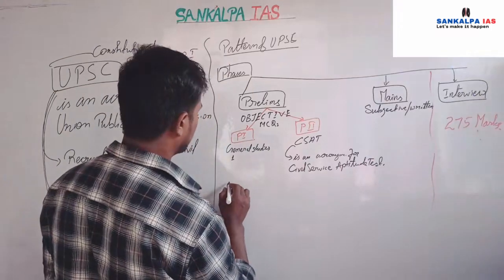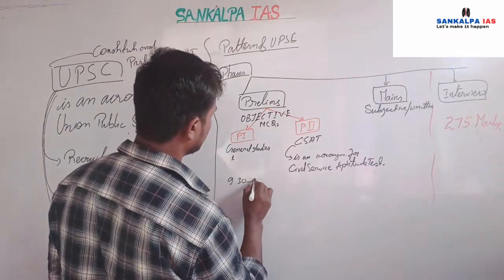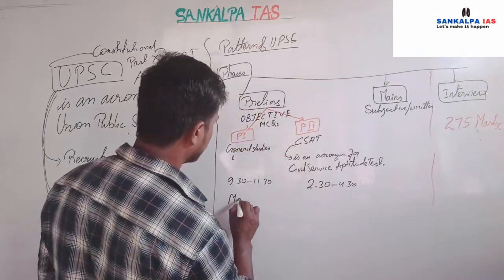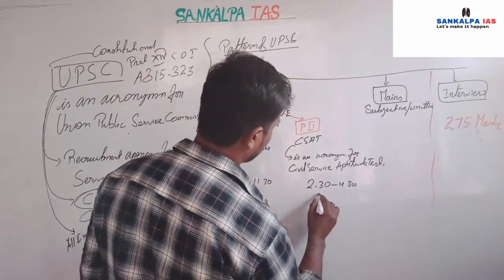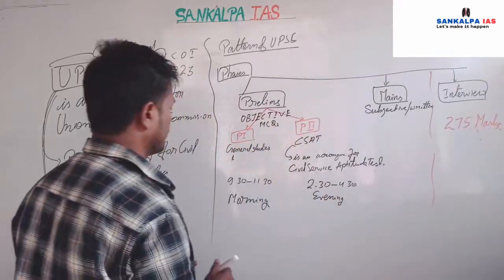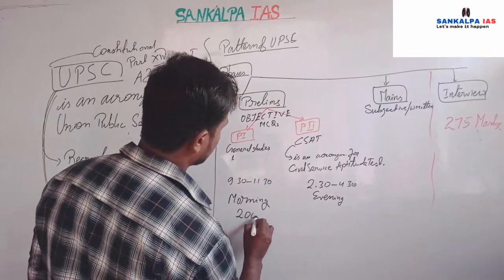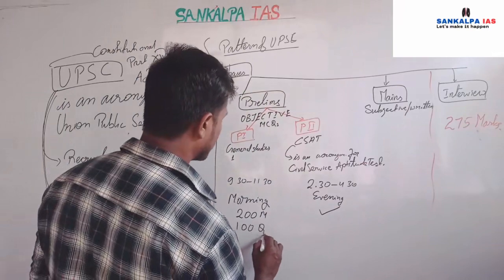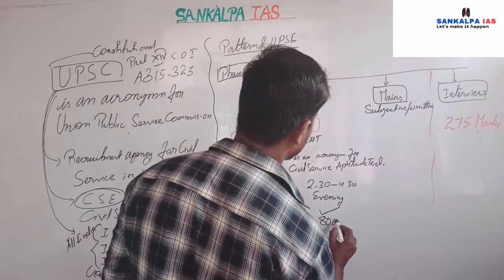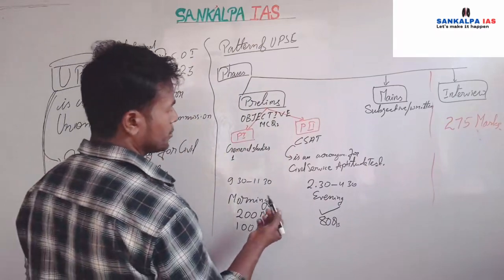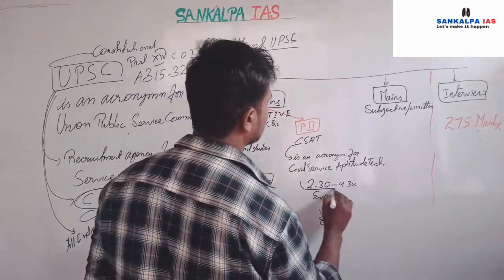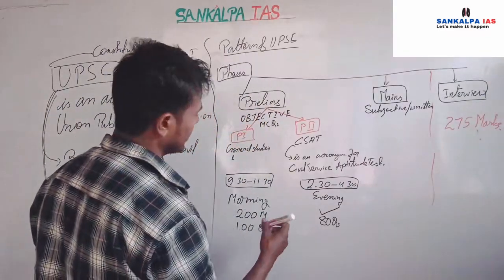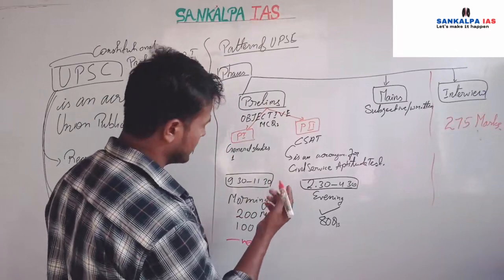As far as timings are concerned, Paper 1 is conducted from 9:30 to 11:30 and Paper 2 from 2:30 to 4:30 in the evening. Both papers consist of 200 marks. Paper 1 contains 100 questions and Paper 2 contains 80 questions for 200 marks. The time duration is the same — 2 hours.